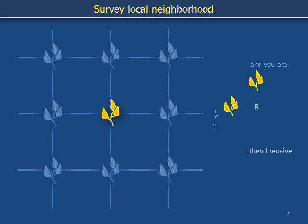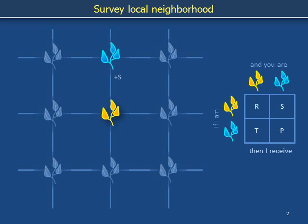Let's label the other type of plant blue. The remaining three payoffs possible are labeled S, T, and P. For example, by interacting with a blue neighbor to our north, we get a payoff of S. Our interactions to the east, south, and west provide payoffs of R, R, and S, respectively.